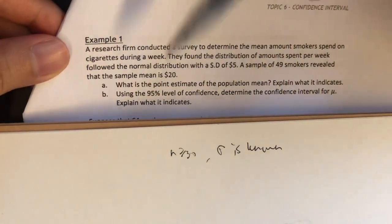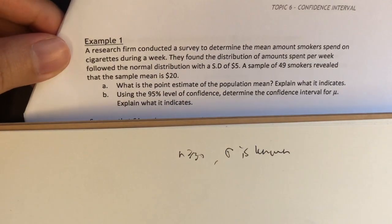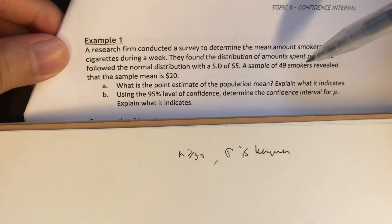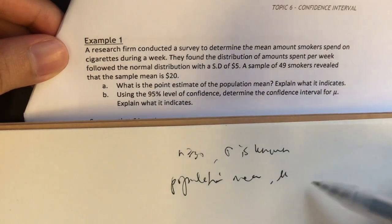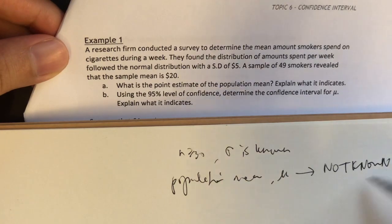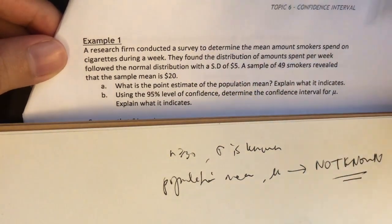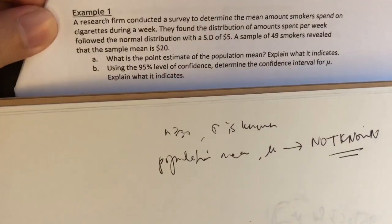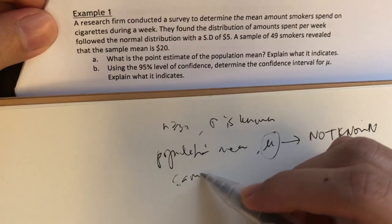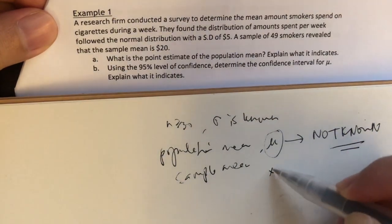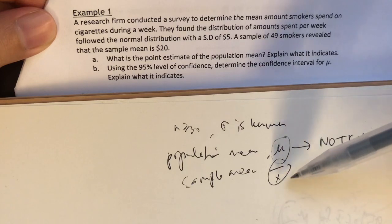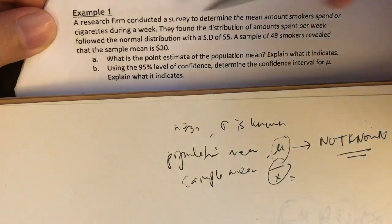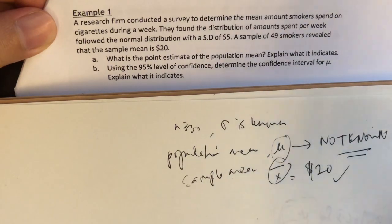Let's look at Part A: what is the point estimate of the population mean? In this story, we don't really know what the population mean is. Population mean, or mu, is not known. We do not know what mu is — because if you knew what mu was, why bother finding the confidence interval? However, we know that the best estimate for mu is the sample mean. So the best estimate or best guess for mu is x̄. Therefore, the point estimate of the population mean is the sample mean. The sample mean here is $20, so $20 is the best estimate of the population mean.